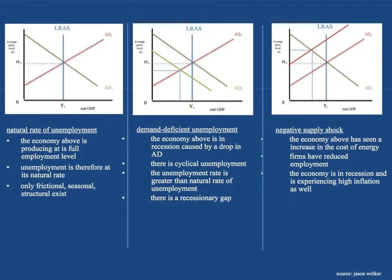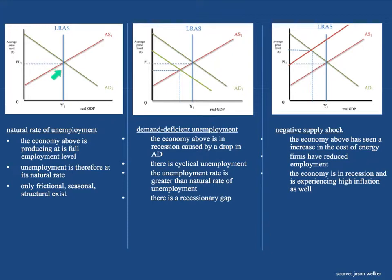Now check out these models — these are pretty cool too. This is something Jason Welker put together in his course companion. Here is the natural rate of unemployment — a combination of aggregate demand and aggregate supply in a neoclassical model with the long-run aggregate supply curve. When the economy is operating at this point, there is a natural rate of unemployment, meaning the economy is producing at its full employment level. There's only frictional, seasonal, and structural unemployment. At this optimal point, full employment means roughly a 5% unemployment rate, which is actually healthy — a sign of economic strength.